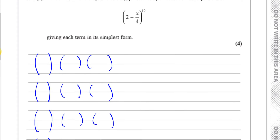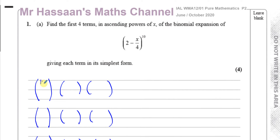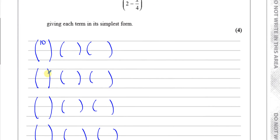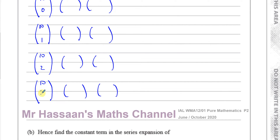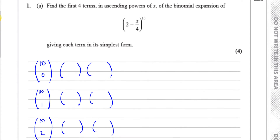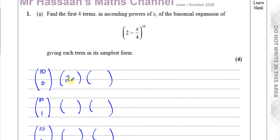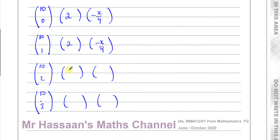The first bracket is for our NCR. We start with the highest power, which is 10, so you'll have 10 on each of the tops, then start with 0, then 1, then 2, then 3 — those are the first four terms. In the second bracket you're going to have a 2, and in the third bracket you're going to have a minus x over 4. What will be different in each row is the powers.